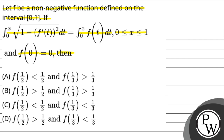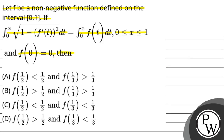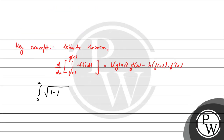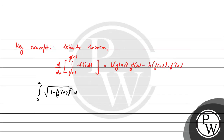वो सबसे पहले जो हमें दिया गया है integral वो लिख लेते हैं — that is integral from 0 to x of √(1 − (f'(t))²) dt, और यह equal है integral from 0 to x of f(t) dt। तो Leibniz theorem apply करते हैं — हम लोग यह दोनों तरफ differentiate कर लेंगे with respect to x।